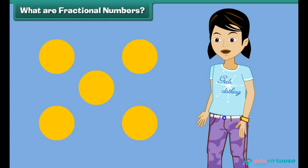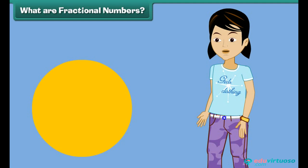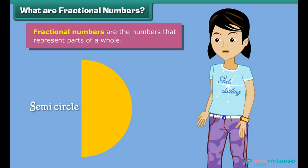Can you count how many circles are here? 1, 2, 3, 4, 5. But what if there was just half part of a circle? How would we count it? Well, we will use fractions. Fractional numbers are the numbers that represent parts of a whole.